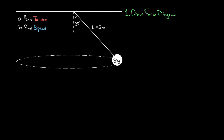The forces acting on this three-kilogram sphere are the force of gravity — straight down, equal to m times g, found using mass times 9.8. The only other object touching this mass is the rope, so the only other force is the force of tension, labeled T. This will be the total force of tension from the rope. The only other step in this problem-solving strategy is to use Newton's second law.